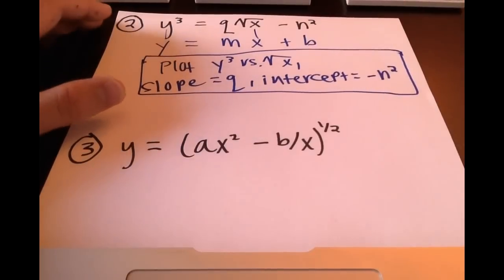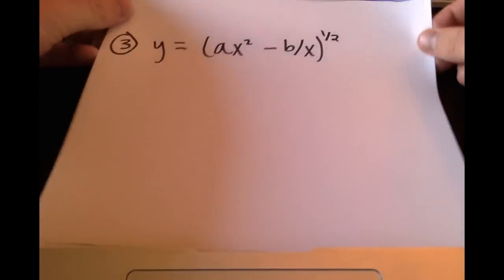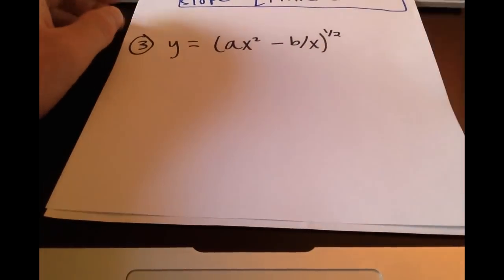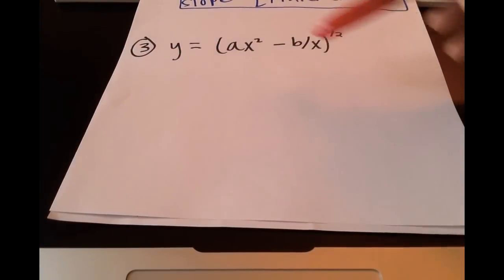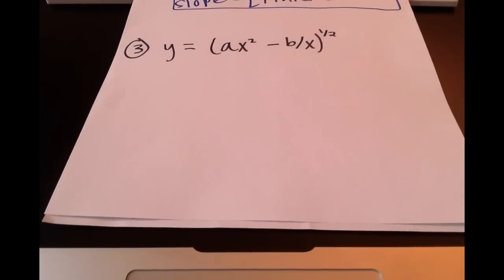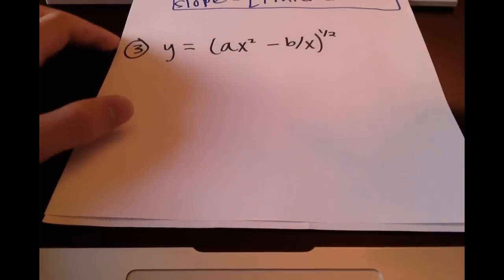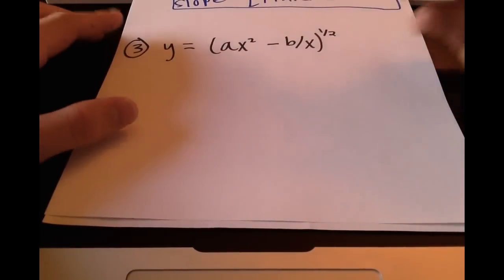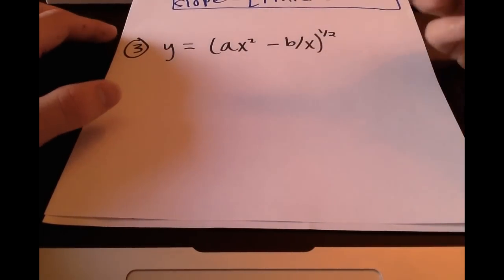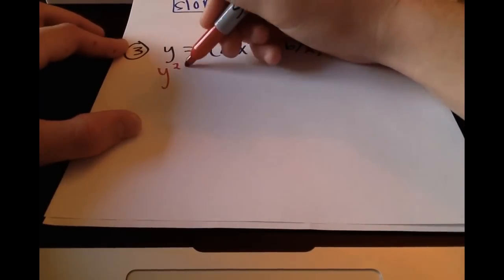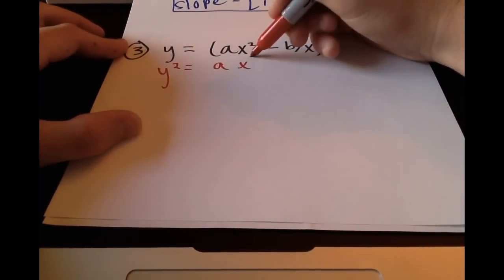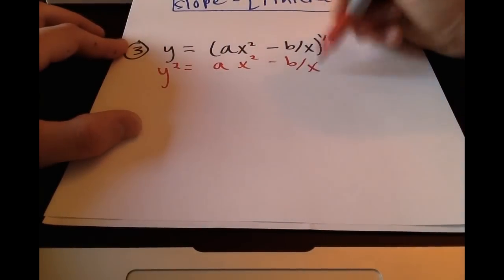Looking at this last example, it's a little different from the other ones we looked at. It is not yet in the y = mx + b form, so we have to manipulate it and get it into that form. First I see there's a square root on the whole right-hand side, so it would be a good idea to square both sides, which would get rid of that square root.